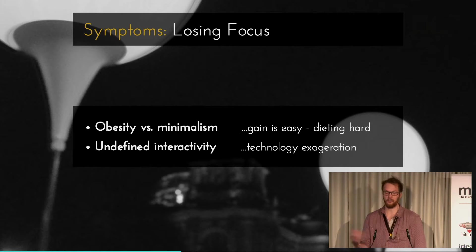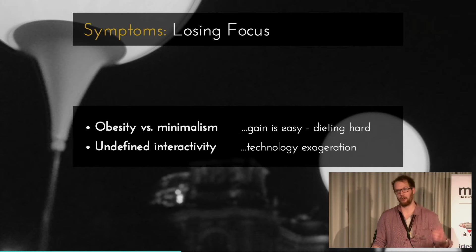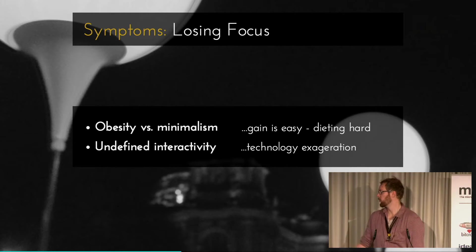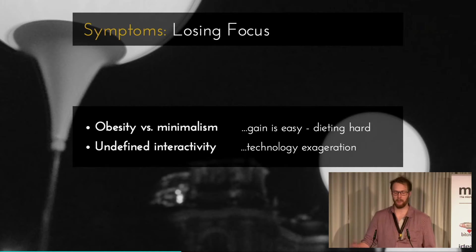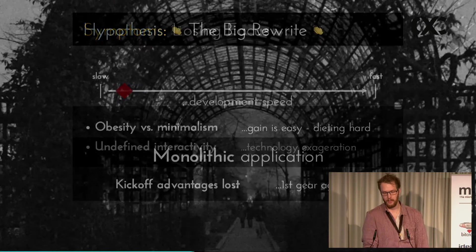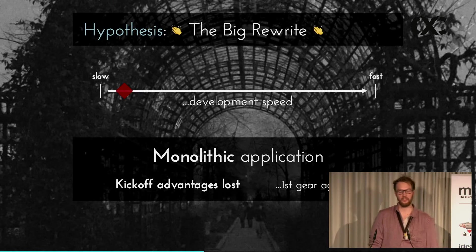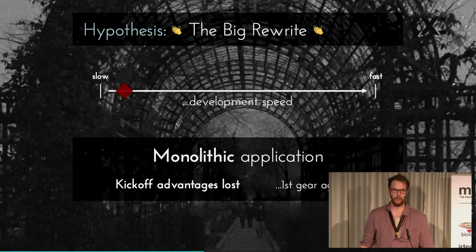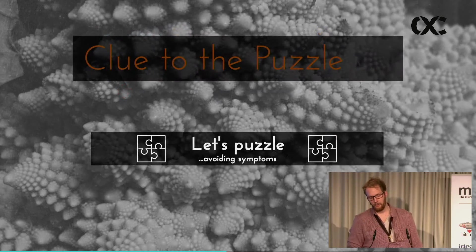And then you're losing focus. You include all sorts of libraries — you just get moving somehow — and all the libraries have a cost. You include a Lodash or something, but you cannot get rid of it. Gain is very easy, but dieting is hard. You just lose complete focus and have this technology exaggeration where it shows some very bloated framework and you can't move anymore. And then you've proven the hypothesis right — you have a monolithic frontend application. Your kickoff advantages are lost, you're in first gear again, and your manager is going to make you rebuild the whole thing.